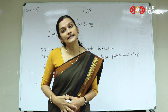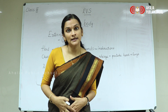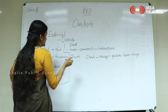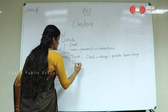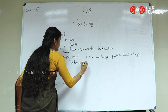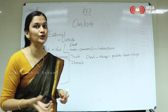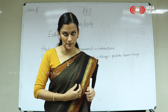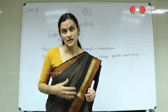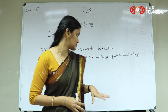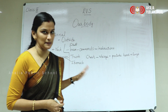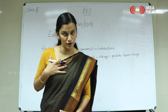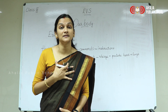Abdomen has internally the stomach, kidney, liver, pancreas, etc. Whatever food you eat through your mouth is taken through the food pipe, reaches the stomach, and digestion happens there. The nutrients are then taken from the food. So chest and abdomen are the external parts of your body coming under the trunk part.